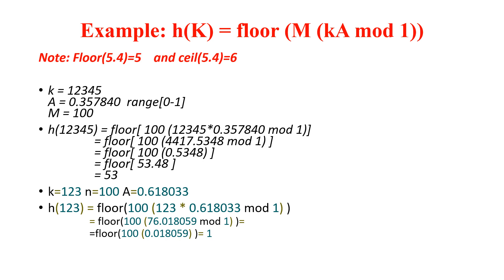First of all, you should know what floor and ceiling are. If a value is 5.4, and you take the floor value, you get 5. If you calculate the ceiling value of 5.4, you get 6. Remember: floor always gives the lower value and ceiling always gives the upper value.